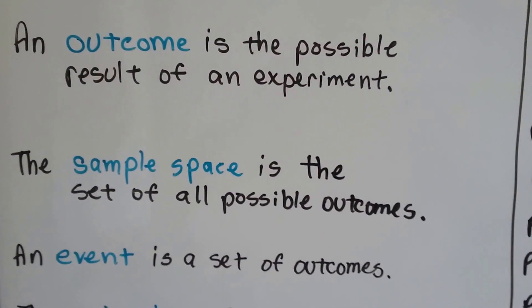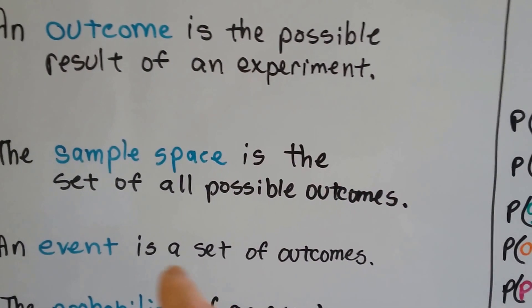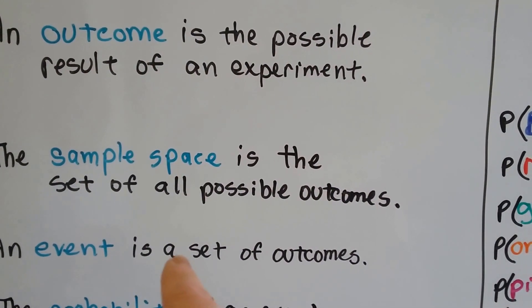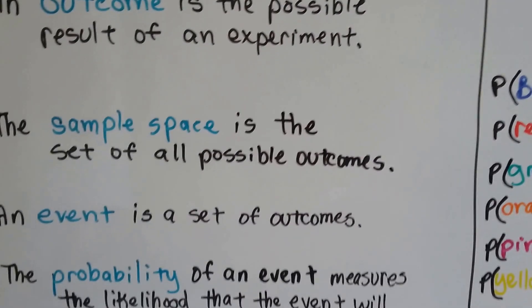Now remember, it's the possible outcomes. An event is a set of outcomes. An event is the actual outcome, and the sample space is possible outcomes. So remember the difference.